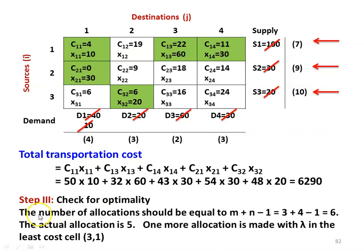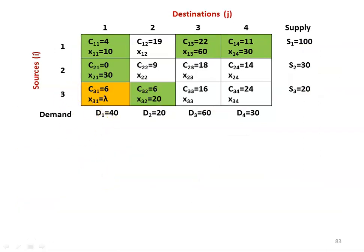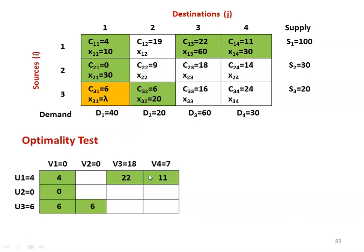Checking for optimality: the number of allocations should equal m plus n minus 1, which is 3 plus 4 minus 1 equal to 6. But the actual allocations are only 5, so one more allocation must be made with lambda in cell (3,1), which should not form a closed loop. After adding this allocation (shown in yellow), there are now 6 allocations and we proceed to the optimality test.